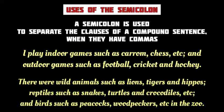In the second example also, all three clauses have commas for enumerating or listing names. The three independent clauses are: 'There were wild animals such as lions, tigers, and hippos; there were reptiles such as snakes, turtles, and crocodiles; there were birds such as peacocks, woodpeckers, etc. in the zoo.' Hence, they are separated with semicolons in the sentence.